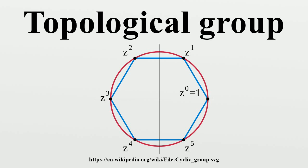Every topological group can be viewed as a uniform space in two ways. The left uniformity turns all left multiplications into uniformly continuous maps,